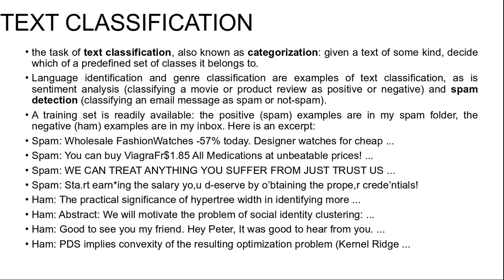From this excerpt, we can start to get an idea of what might be good features to include in the supervised learning model. Word N-grams such as 'for cheap' and 'you can buy' seem to be indicators of spam. Character-level features also seem important — spam is more likely to be all uppercase and to have punctuation embedded in words. A character model should detect such patterns.